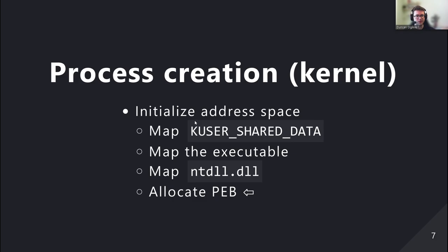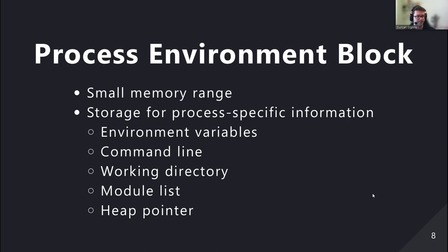Continuing with process creation on the kernel side, after mapping memory the kernel allocates the PEB — the Process Environment Block. This is a small memory range, roughly one or two pages, containing process-specific information: environment variables, the command line, the current working directory, the list of currently loaded modules, and pointers to the process heaps.